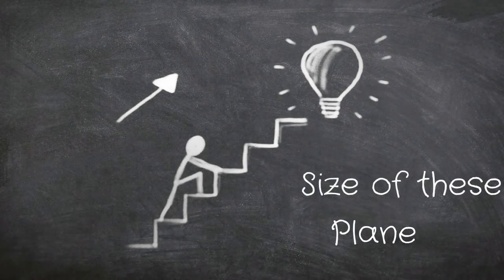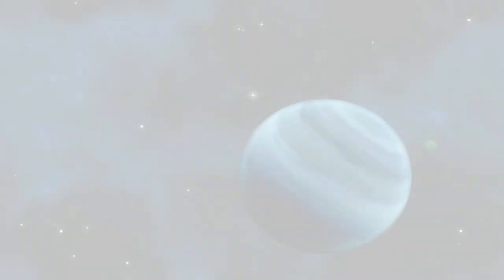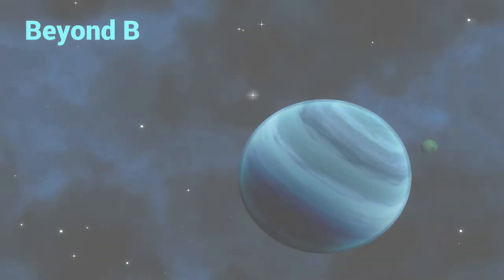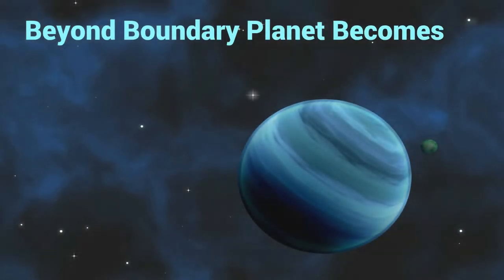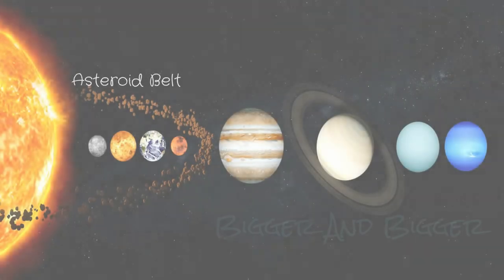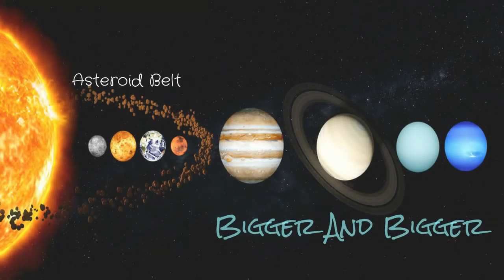First, we have to know the size of these planets. In any solar system, there's a boundary, a cutoff, beyond which the planets become a gas giant. In our solar system, this cutoff is the asteroid belt. Beyond the asteroid belt, the planets get bigger and bigger.